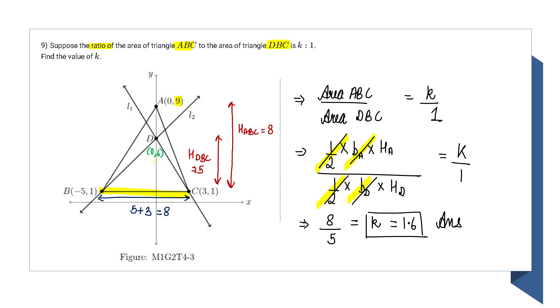The larger triangle's height upon the smaller triangle's height will be the final answer. The larger triangle's height is 9 - 1 = 8. The smaller one is 6 - 1 = 5. So the final answer is 8 upon 5, which is 1.6.